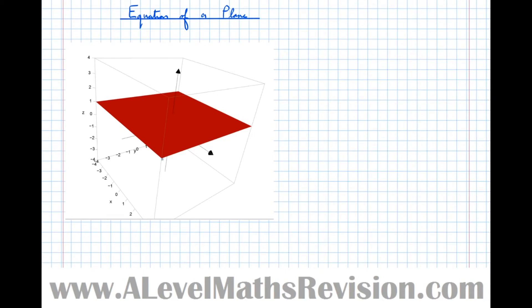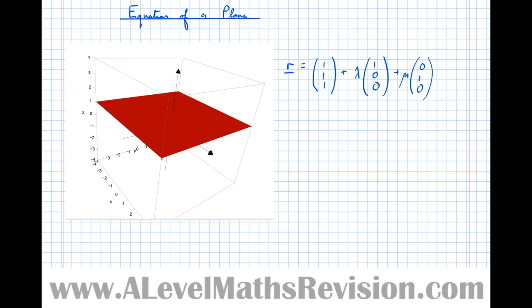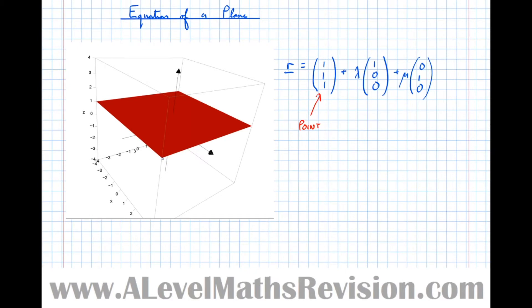I'm going to give you a bit more information about this plane by telling you its equation. The equation of this plane is: r, meaning any point on the plane, equals (1, 1, 1) plus λ(1, 0, 0) plus μ(0, 1, 0). Let me explain exactly what this means.